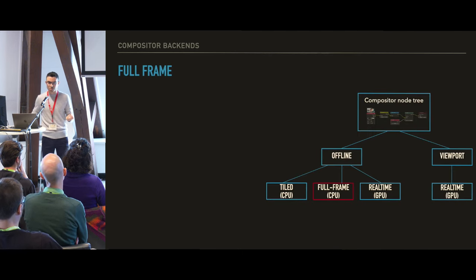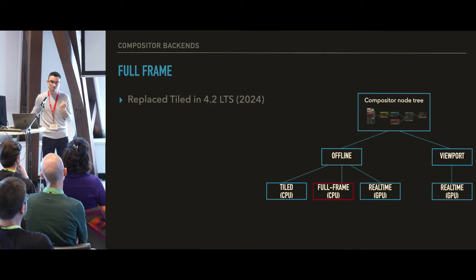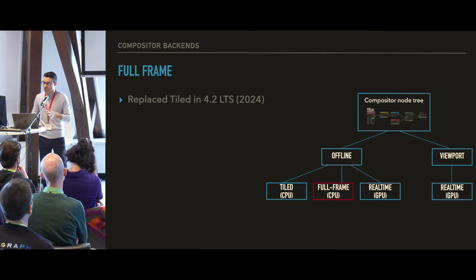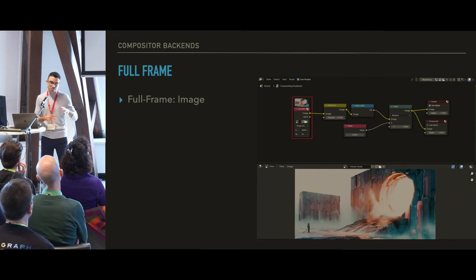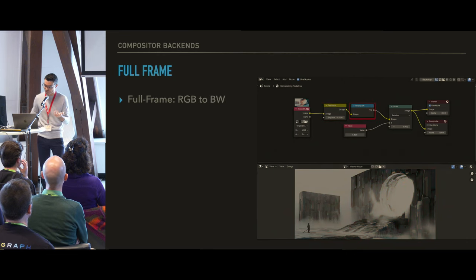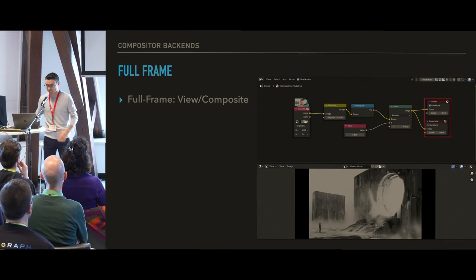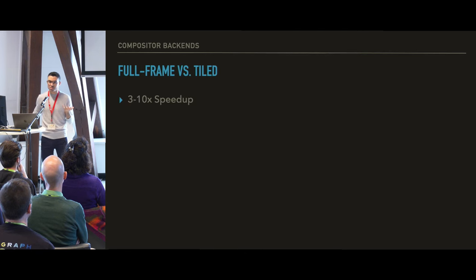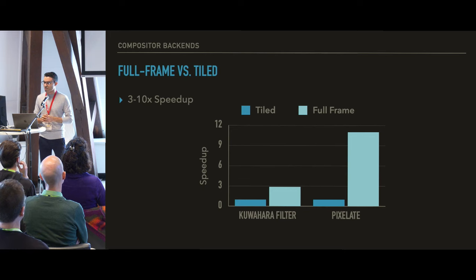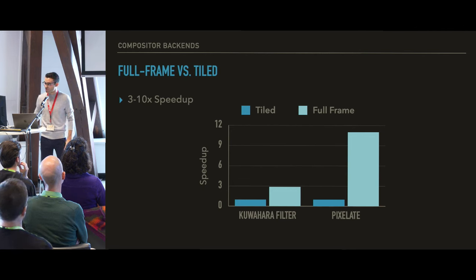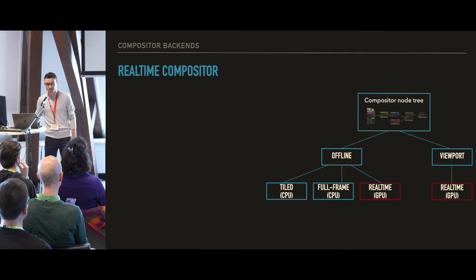The full-frame compositor in contrast works completely differently. This has been released in 4.2 but has been around for a couple years in development. The way it works, as the name suggests, is to start with the full frame first. If I have an input image I look at all of it, then I process the next node for the whole image. If I want to do black and white, I process the whole image; same for scaling. Even though the idea is relatively simple, it gives us a significant speed up. The details are much more complex under the hood with multi-threading and all the corner cases, but the basic idea is to look at the whole image at once. The numbers I showed a couple slides ago refer to the comparison between the tiled compositor and the full-frame compositor.